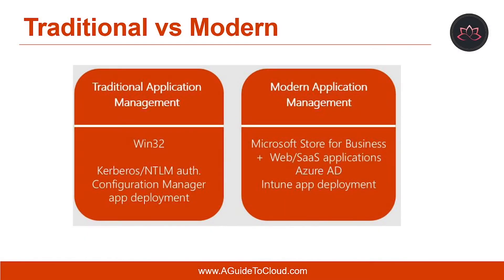Today, many companies are still using traditional Win32-bit applications, also called desktop apps, on their Windows devices. In the past, desktop apps were the only supported app type on Windows devices. But today, on Windows 10 devices, you can also run Windows Store apps and Universal Windows Platform apps as well.